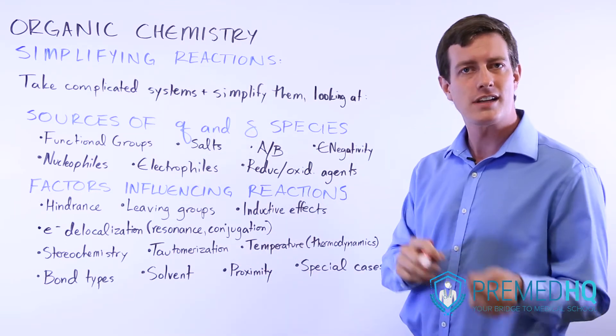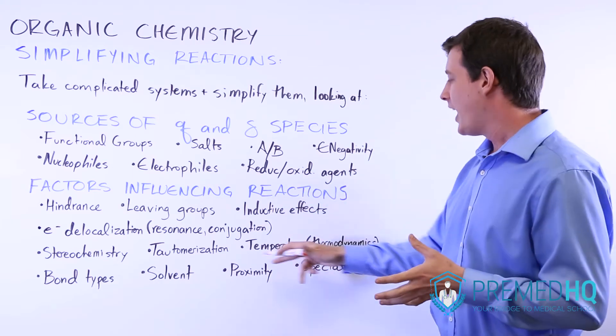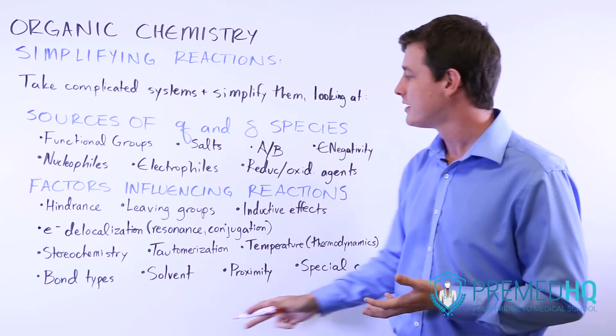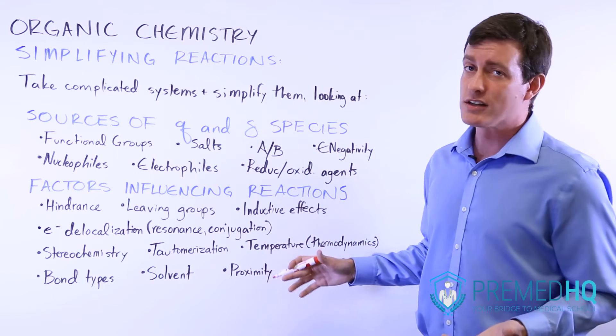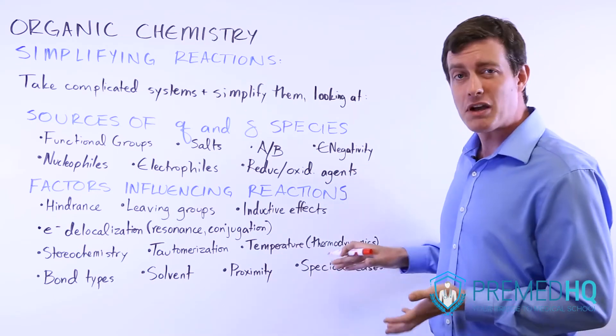Tautomerization, things that will exist at an equilibrium between two different structures. How temperature and thermodynamics can influence these reactions. Different types of bonds, whatever solvent you're in. The proximity, how close two species are to each other. And other special cases.